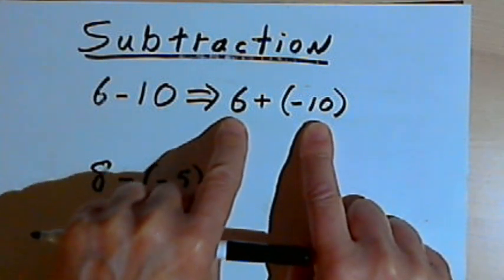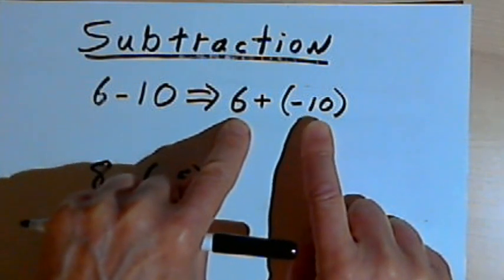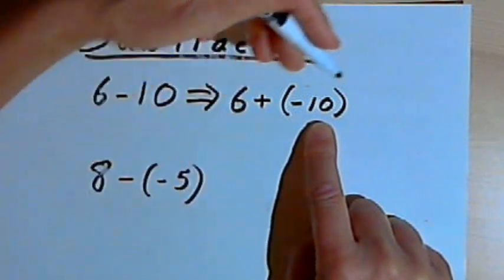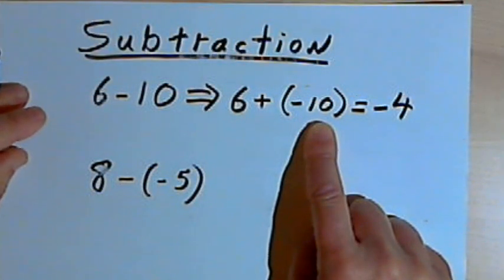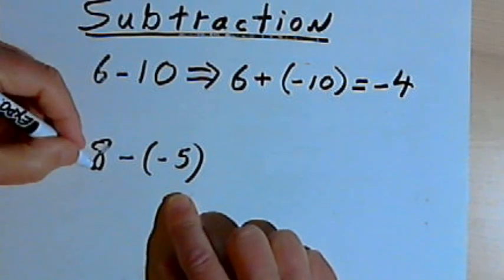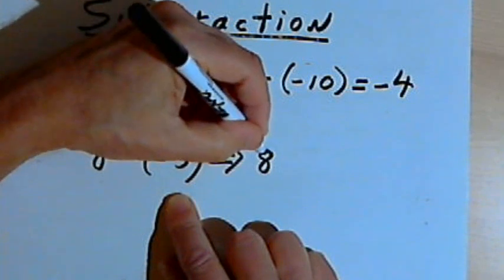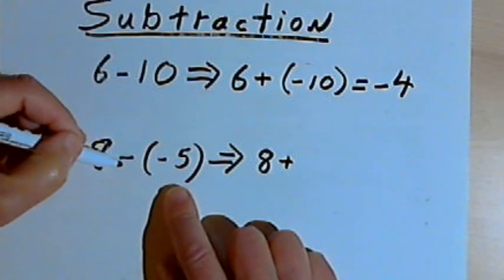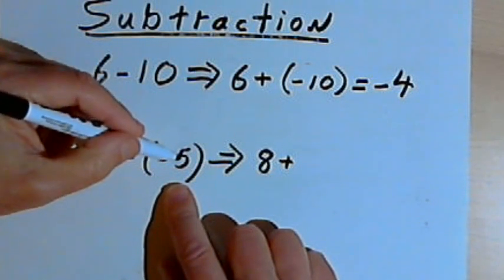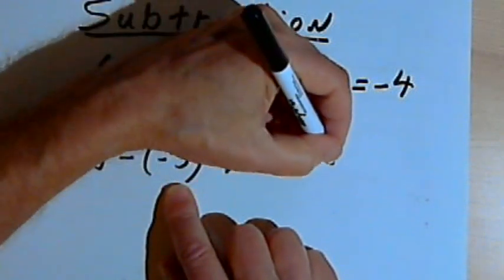With 6 plus negative 10, the signs are different, so I'm going to take the difference between 6 and 10, which is 4. 10 was the larger number and it's negative, so my answer is going to be negative 4. Here's another one: 8 minus negative 5. I'll turn it into an addition problem — 8 plus. The opposite of negative 5 is positive 5, so now I've got 8 plus 5, which is 13.